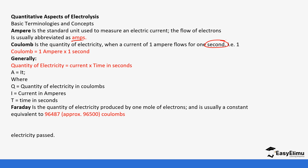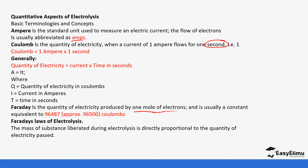Faraday's law states that the quantity of electricity produced by one mole of electrons is a constant equivalent to approximately 96,500 coulombs. The law states that the mass of the substance liberated during electrolysis is directly proportional to the quantity of electricity passed. We will now use these concepts to do some step-by-step calculations.